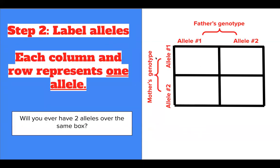Step two would be to break down this genotype into the alleles that make it up, and to label these alleles. Each column and row represents one allele.